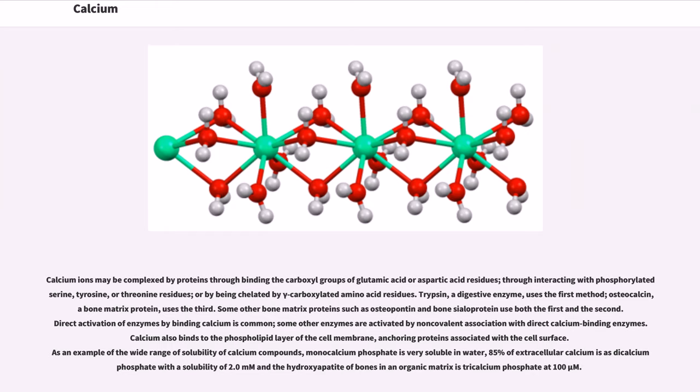Calcium ions may be complexed by proteins through binding the carboxyl groups of glutamic acid or aspartic acid residues, through interacting with phosphorylated serine, tyrosine, or threonine residues, or by being chelated by gamma-carboxylated amino acid residues. Trypsin, a digestive enzyme, uses the first method; osteocalcin, a bone matrix protein, uses the third. Some other bone matrix proteins such as osteopontin and bone sialoprotein use both the first and the second. Direct activation of enzymes by binding calcium is common. Some other enzymes are activated by non-covalent association with direct calcium-binding enzymes. Calcium also binds to the phospholipid layer of the cell membrane, anchoring proteins associated with the cell surface.